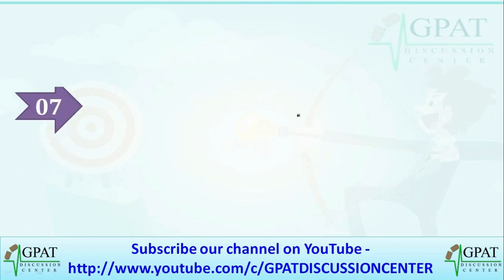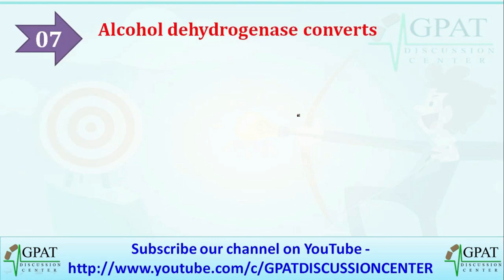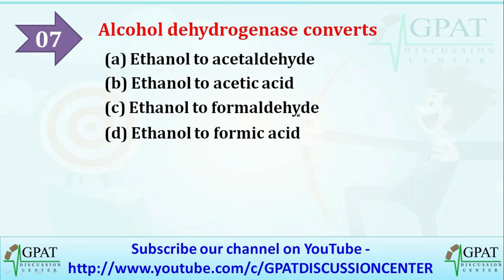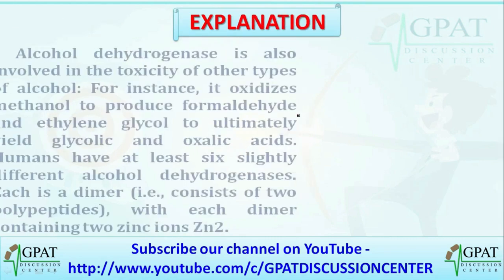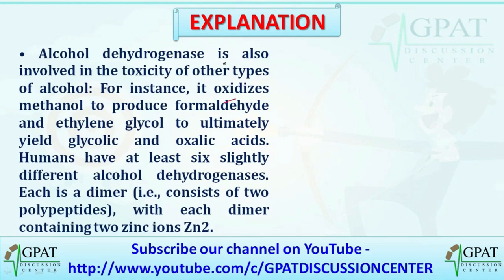The next question: alcohol dehydrogenase converts — options are ethanol to acetaldehyde, ethanol to acetic acid, ethanol to formaldehyde, or ethanol to formic acid. The correct answer is ethanol to acetaldehyde. Alcohol dehydrogenase is also involved in the toxicity of other alcohols; for example, it oxidizes methanol to produce formaldehyde, and ethylene glycol to ultimately glycolic and oxalic acid. Humans have at least six slightly different alcohol dehydrogenases, each a dimer consisting of two polypeptides with each dimer containing two zinc ions.